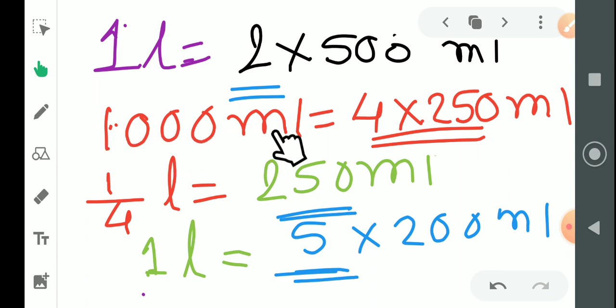Now here is in different way I have written it. Yaha maine alag tarikay se likhaya bacho. One thousand ml is equal to, matlab one liter is equal to four into two fifty. Two fifty ka matlab ho ta hai quarter liter, one fourth liter. One fourth matlab two fifty ml.